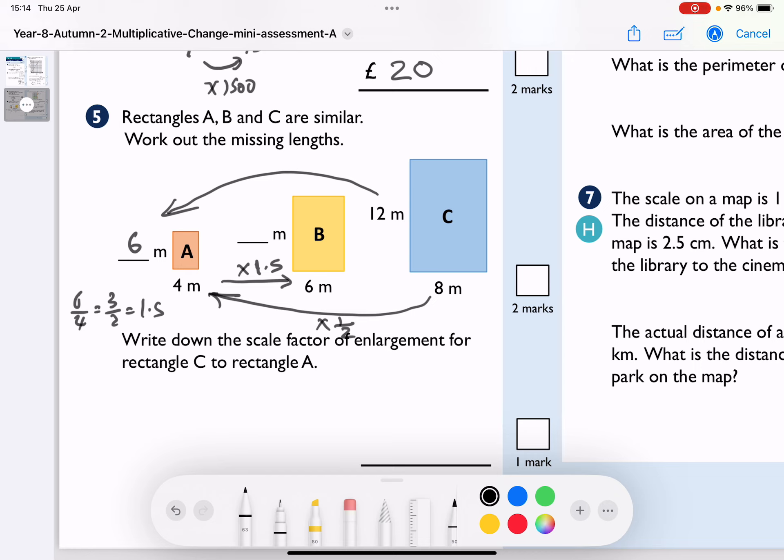So if I times 6 by 1.5, 1 times 6 is 6, half of 6 is 3, so that is 9.